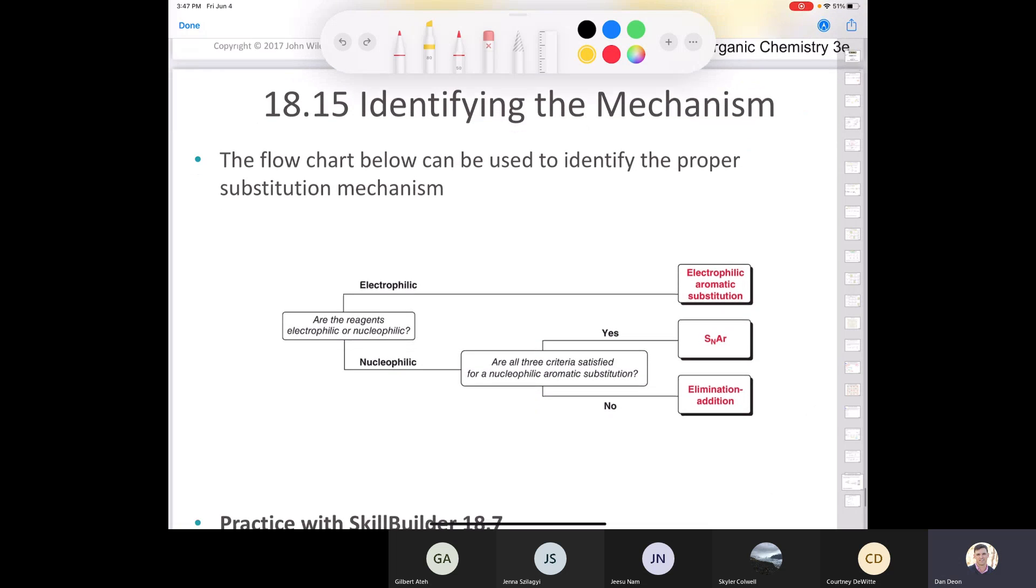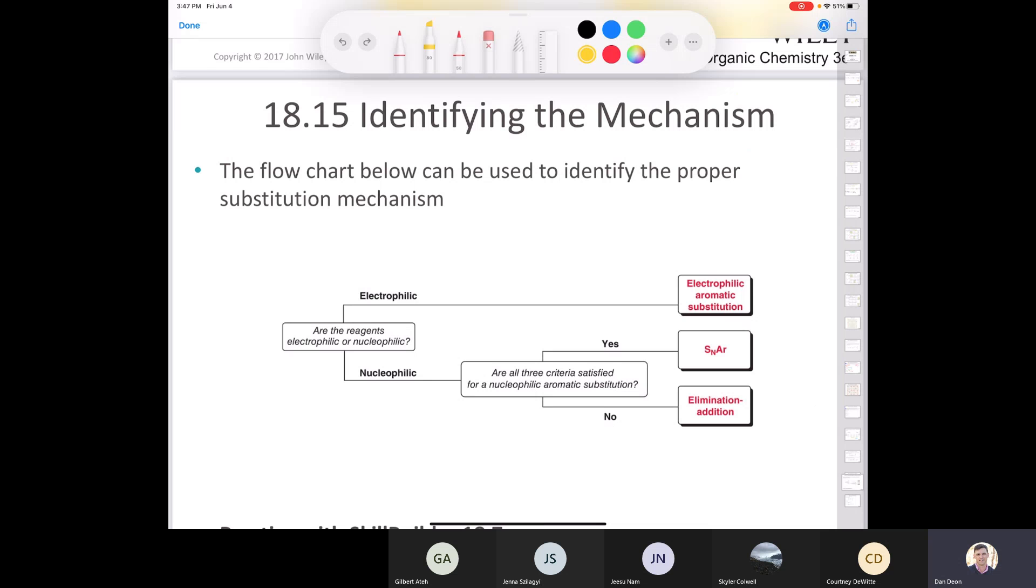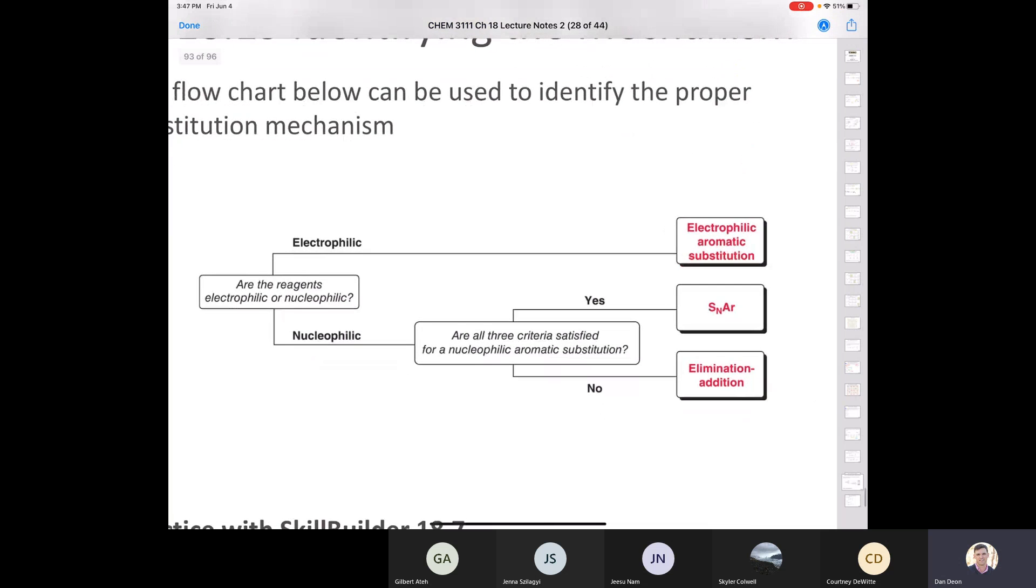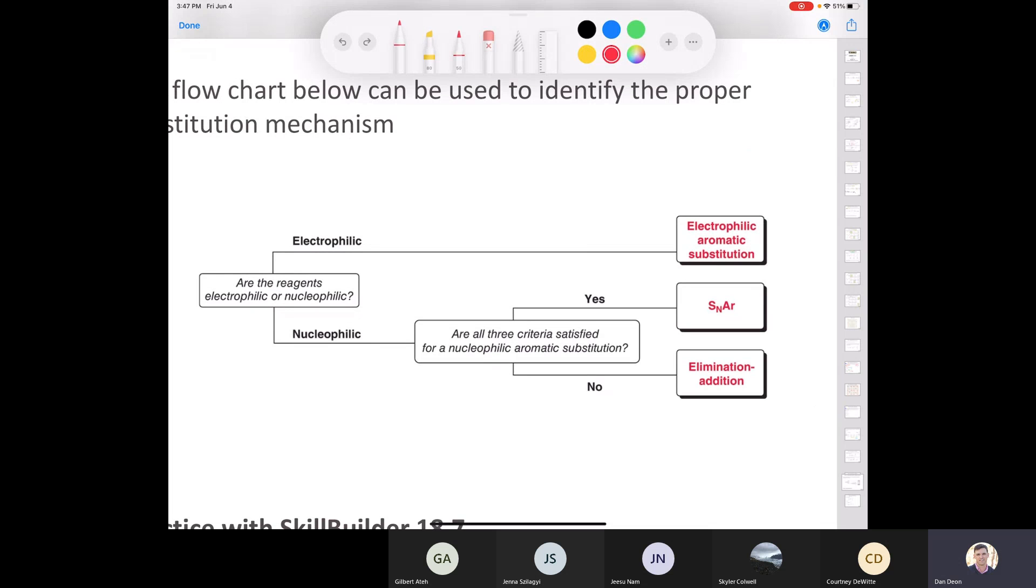Alright. Well, that in mind, that brings us to the last section, which is section 18.15. There's not much to it. Really? I mean, if you think about chapter 18, what are the subjects that are discussed in this chapter? We spent probably 75% of our time looking at electrophilic aromatic substitution. We probably spend 15% of our time looking at SNAR and maybe 5% of the time looking at elimination addition.